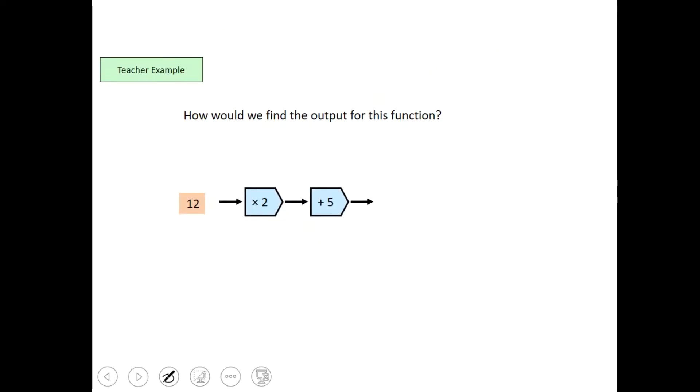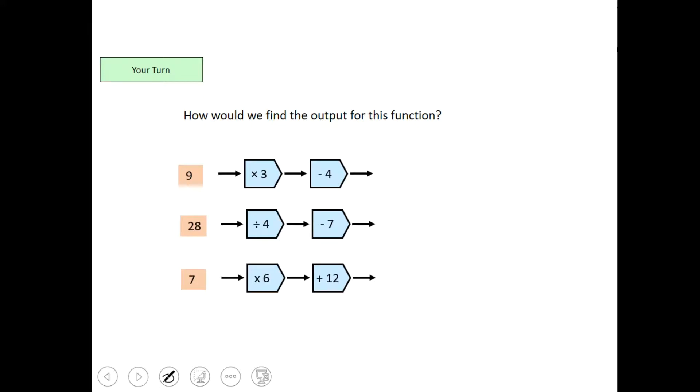We've looked at inputs and outputs. I've already explained this. So, very simply, you're doing things one step at a time. 12 times 2, 24, 24 add 5, 29 would be your output for this one, okay? Now, I'd like you to try these 3 questions, please. Have a go at those yourself, pause the video, press play when you want to see the answer. So, there are all 3 of the answers there. Hopefully, you got those right.